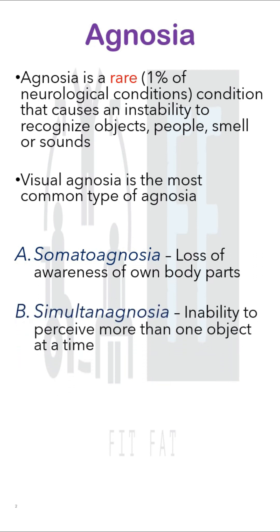The second was simultanagnosia. It is the inability to perceive more than one object at a time. Now there are two types: first is the dorsal and second is the ventral. In dorsal, people cannot see more than one object at a time. In ventral, people can see more than one object but cannot identify more than one object.